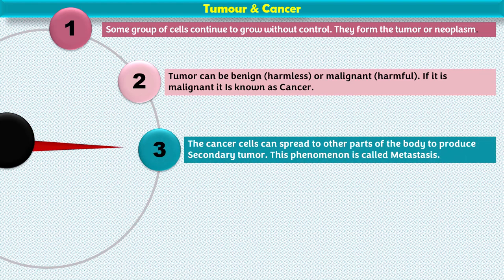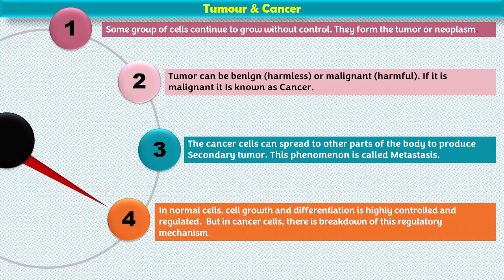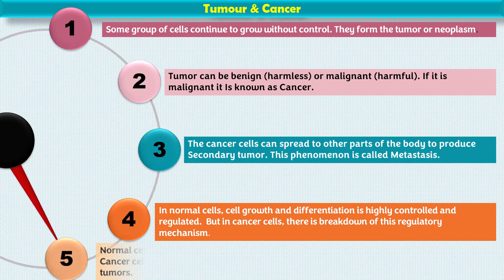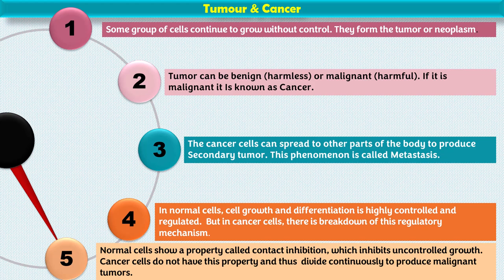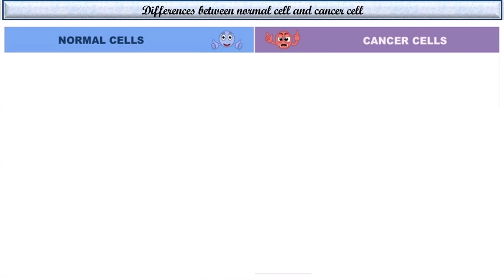Cancer cells can form a secondary tumor. Metastasis is the process by which cancer cells spread to form secondary tumors. Contact inhibition is also affected in cancer cells.